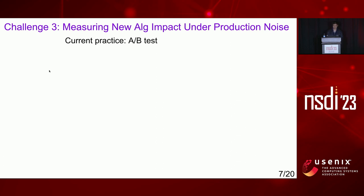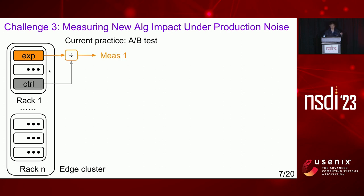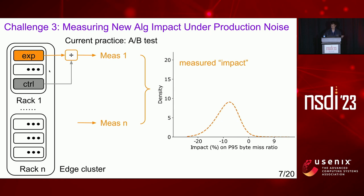Current practice uses A-B testing. A YouTube CDN edge cluster consists of multiple racks of servers. Each rack contains multiple servers configured homogeneously. We can compare different machines on a rack for A-B testing because they share the same hardware and software configurations and the request mix they receive should be similar. For each rack, we select one machine as the experiment to run the new cache algorithm and another as control to run the baseline. We divide the experiment byte miss ratio by the control byte miss ratio to calculate one measurement sample, then aggregate data from different racks and locations to get the impact distribution.